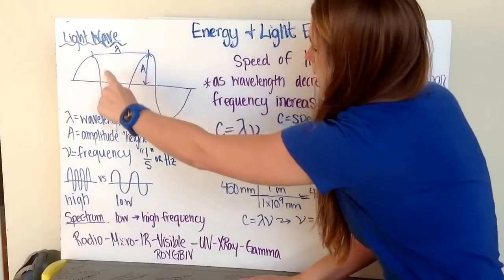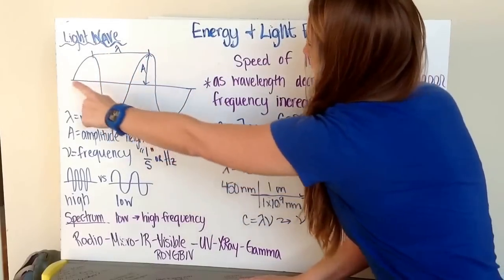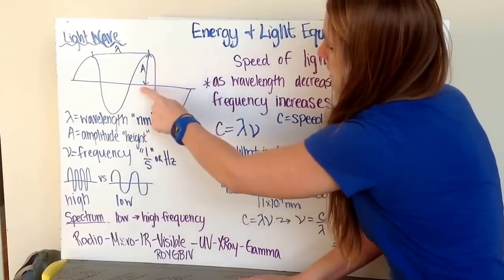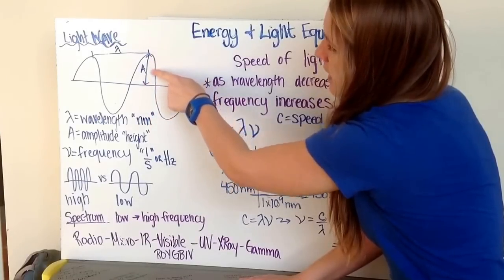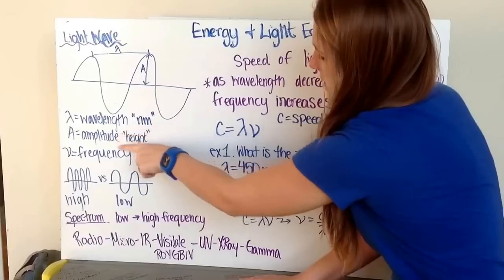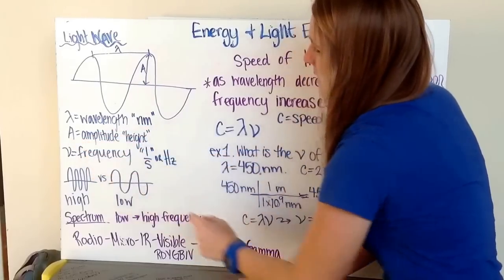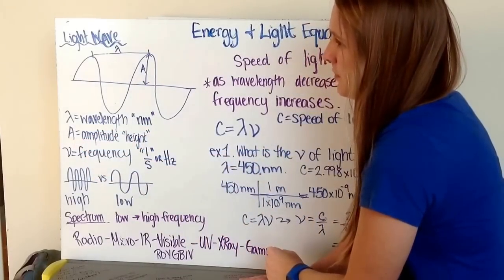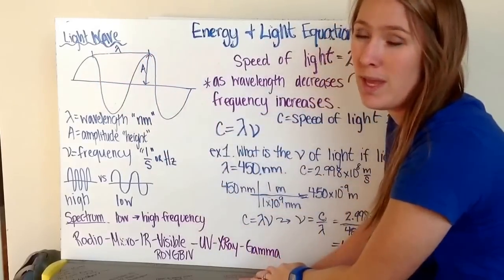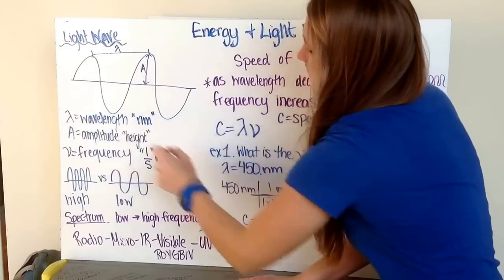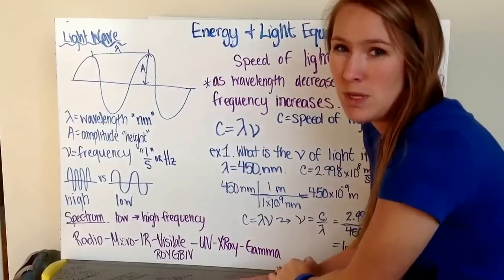We have the wave here going along an amount of time. The distance between the middle and the top of the wave is called the amplitude, which is the height of the wave, and that is labeled as capital A. The distance from peak to peak is how we measure the wavelength, shown by the symbol lambda.